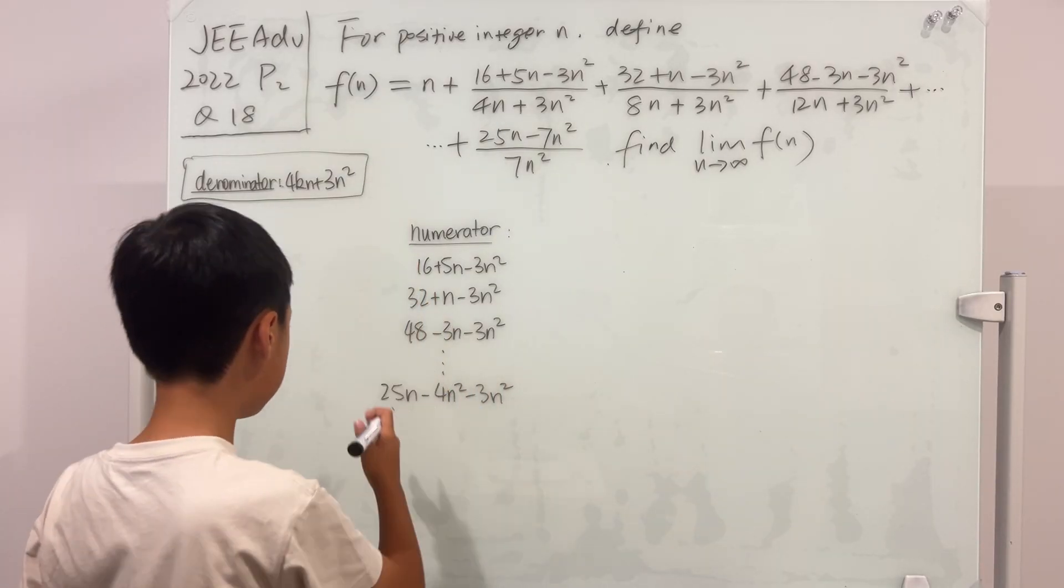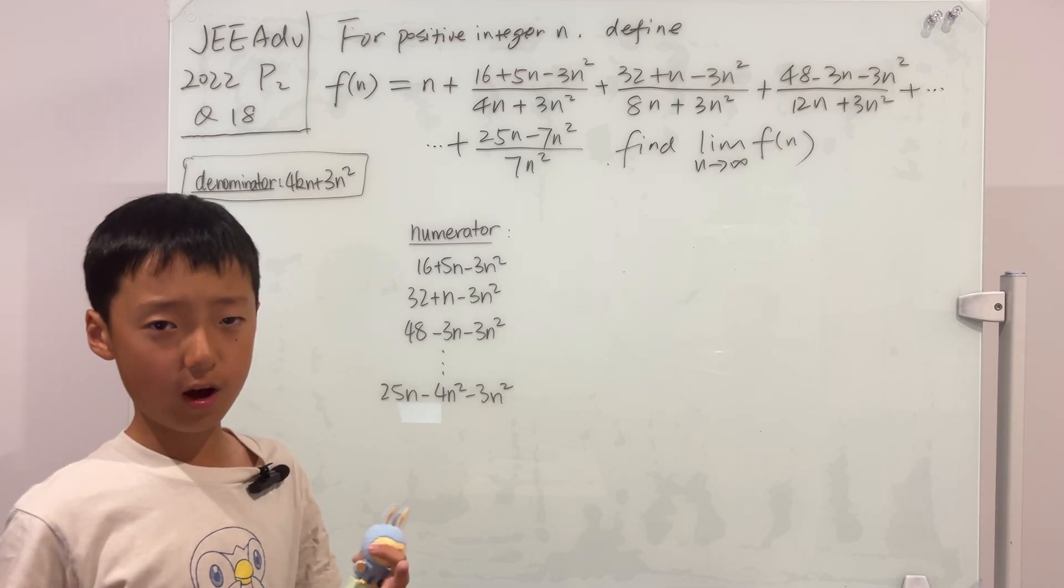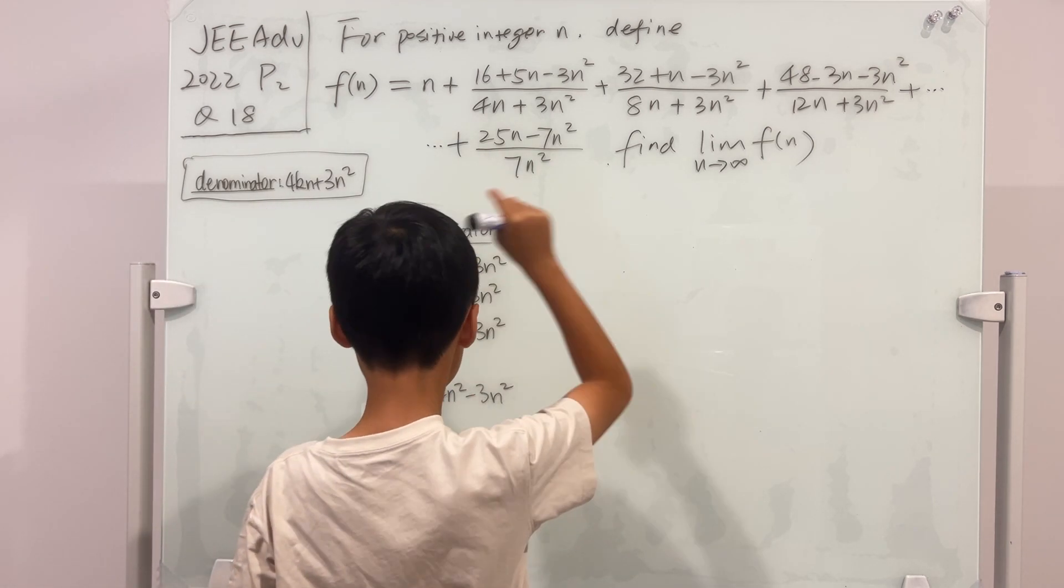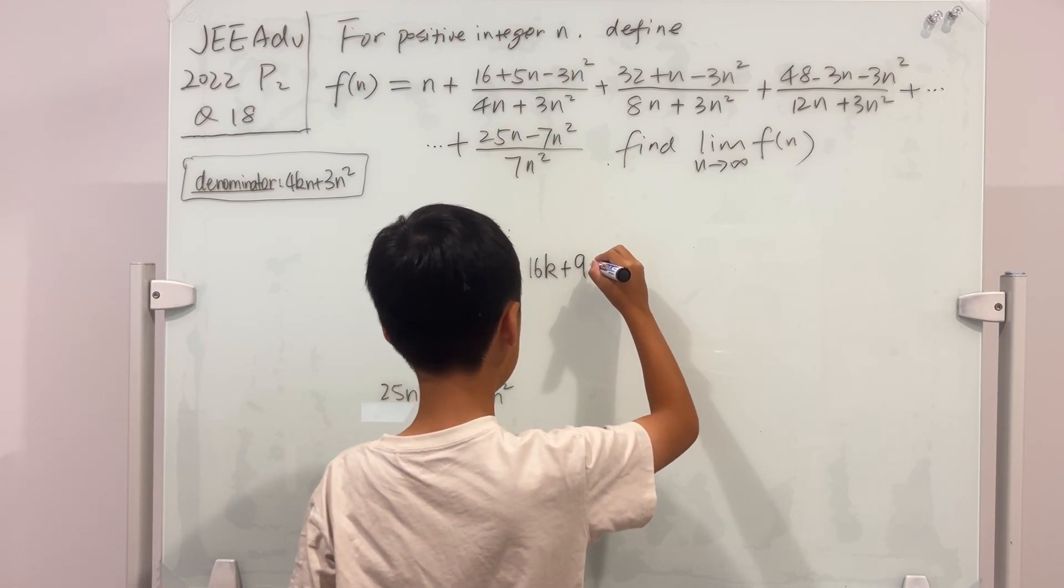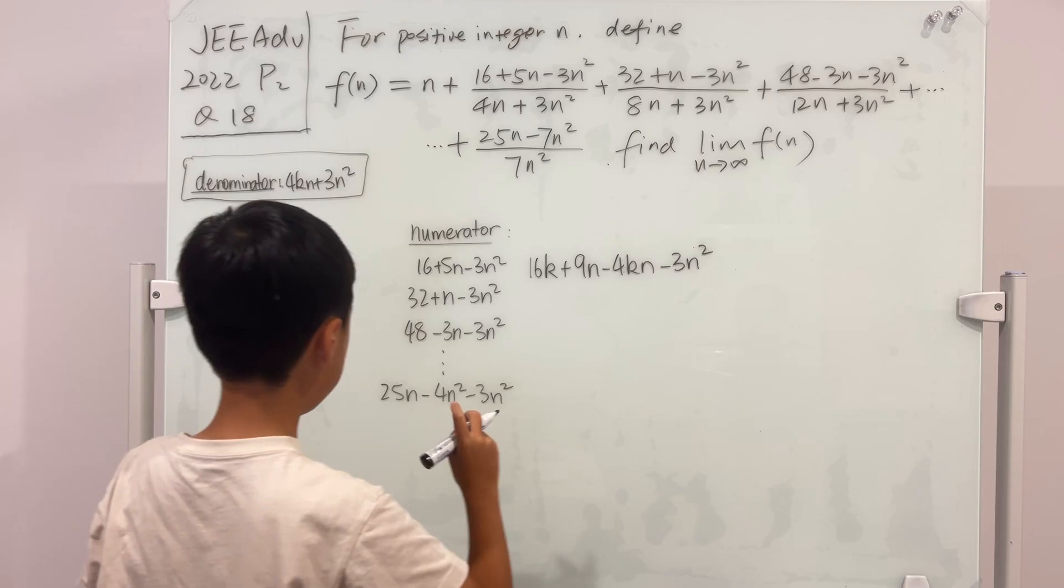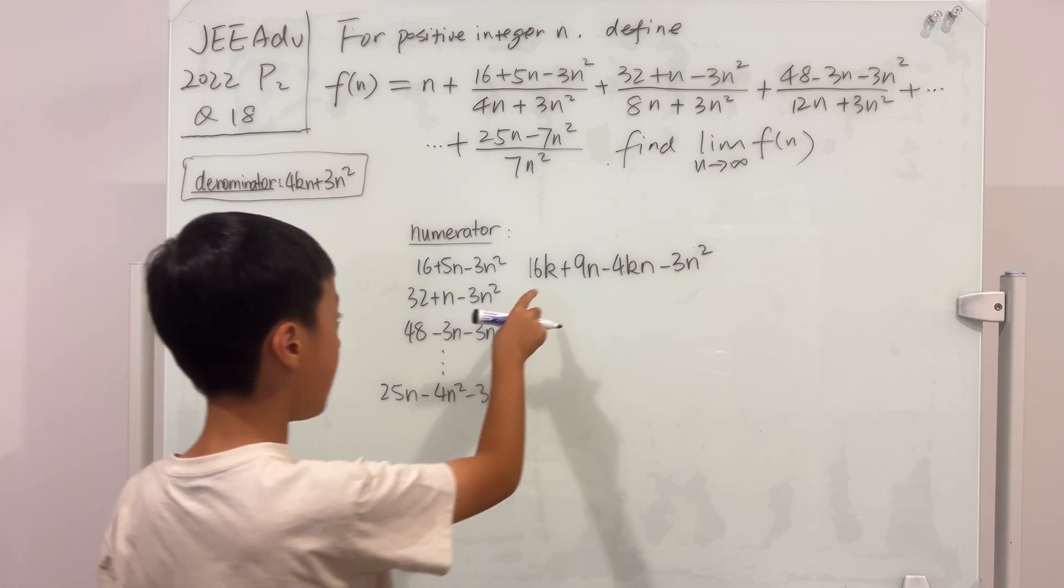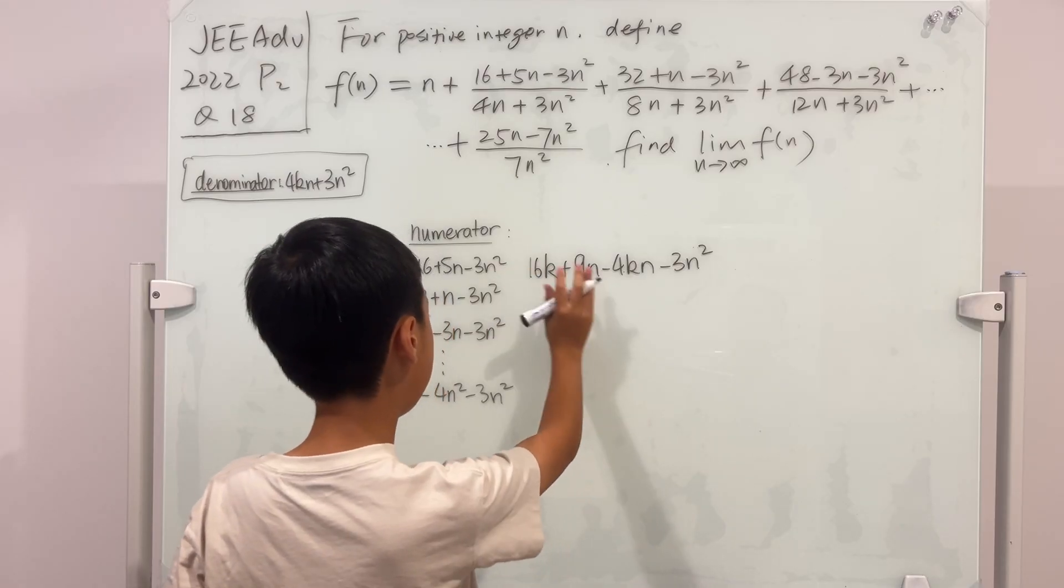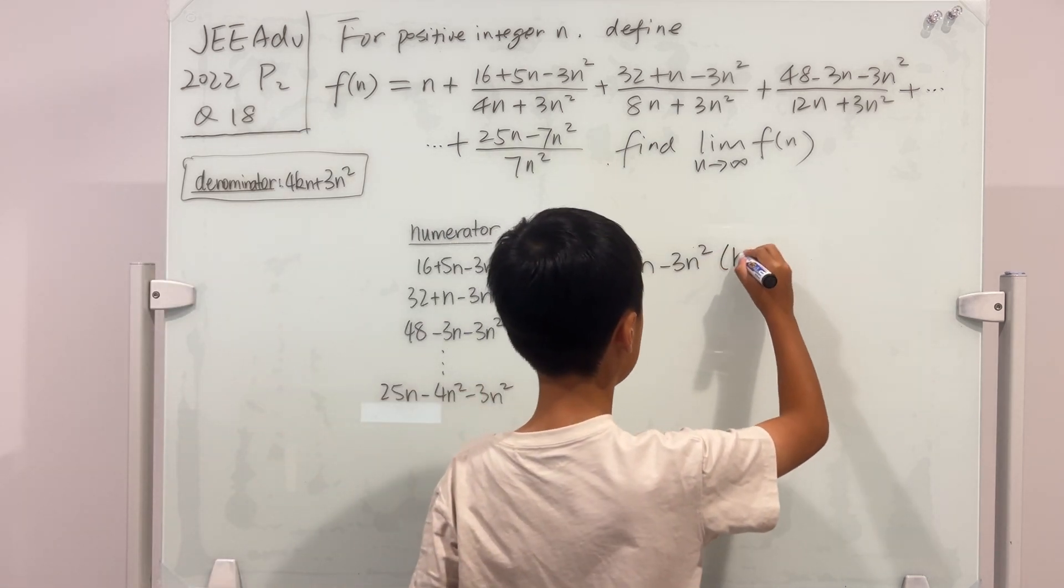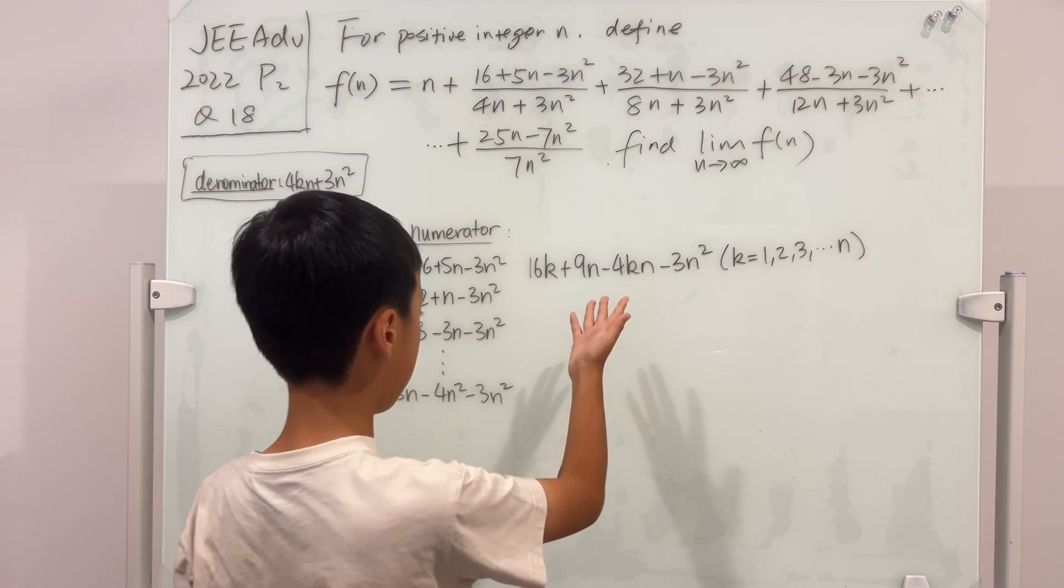And now we can go to the first term. We see that they're all multiples of 16, right? So it should be 16k. Well, even though that might seem wrong, why don't we just test it out? The first term is 16k. The second term will be 9n - 4kn. And the last term will be -3n². But then this covers basically all of them, except for this. Well, I'm going to prove you wrong. Because if k goes from 1 to n, if we plug in n, then these first two terms make up 25n². So this pattern is actually correct. So this is our numerator pattern.